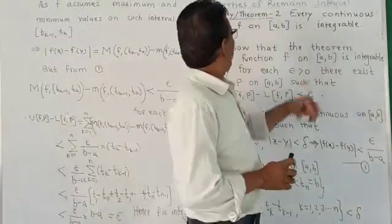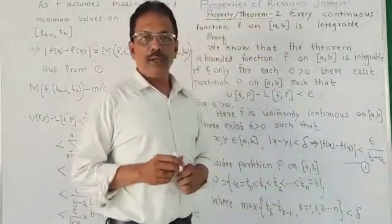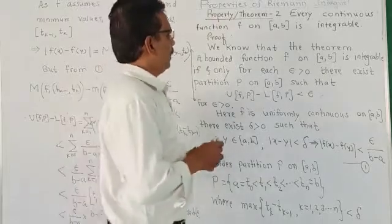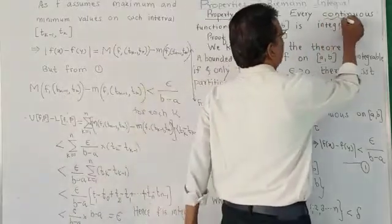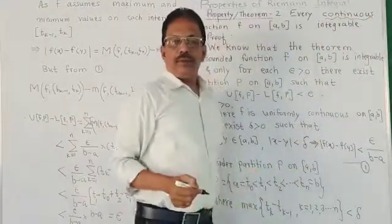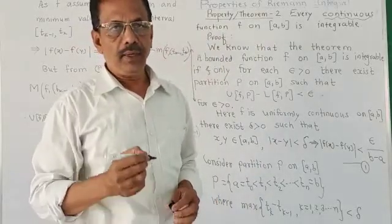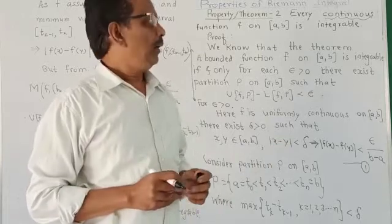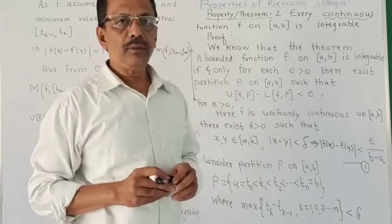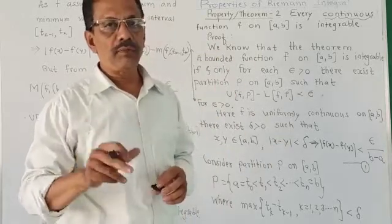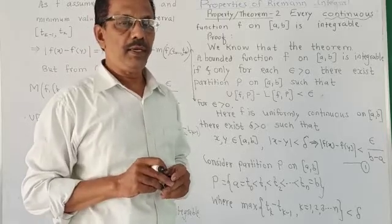That is, every continuous function F on [a,b] is integrable. In the last property, we had to show that every monotone function is integrable on that interval [a,b]. Here we are going to prove every continuous function on [a,b] is integrable.